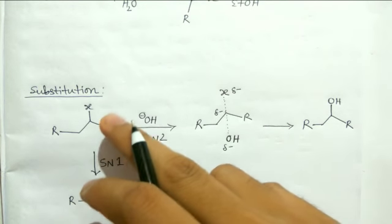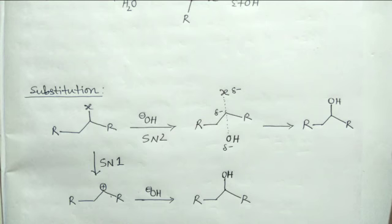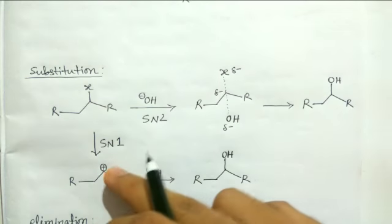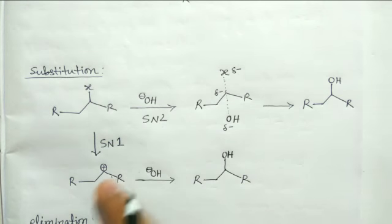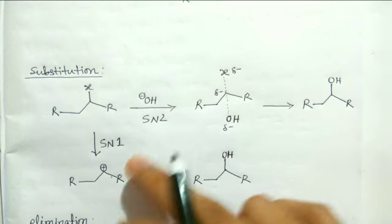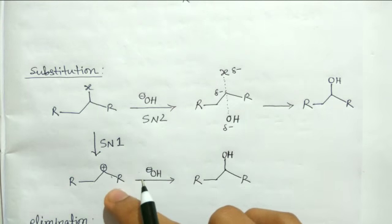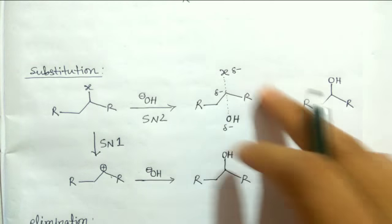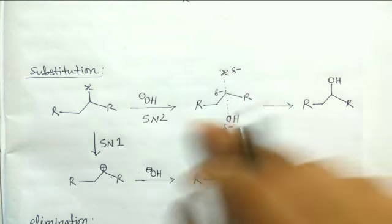So if we look at the transition state for substitution reaction, now we can consider this substitution reaction either as SN2 reaction or as SN1 reaction. In SN1 reaction it will go through a carbocation whereas if the reaction is SN2 then it will go through this transition state.